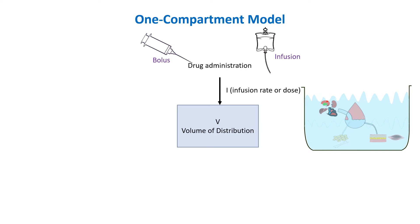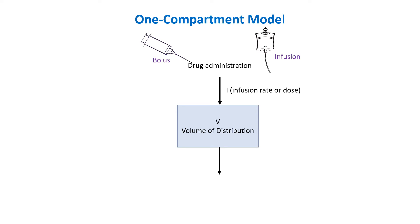The compartment, in other words, represents the volume of distribution. Finally, the drug leaves the body at a constant rate, typically through the process of metabolism or excretion.